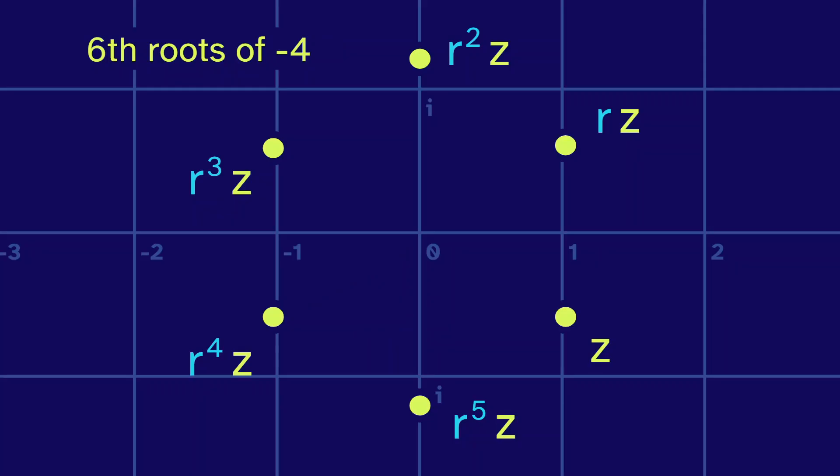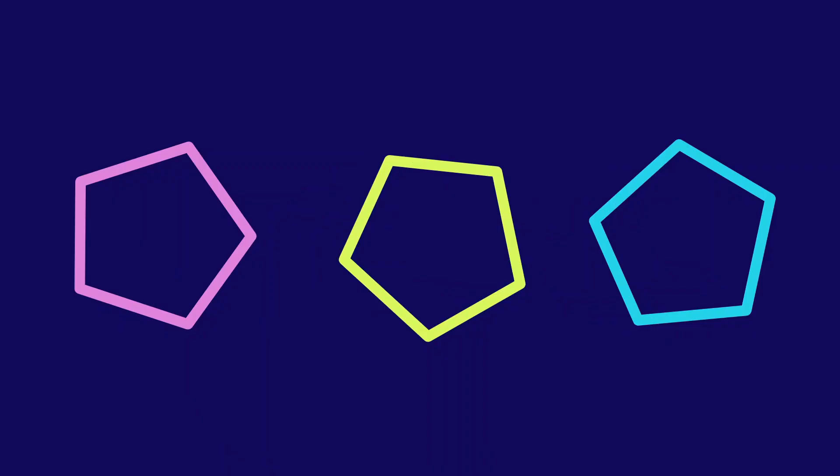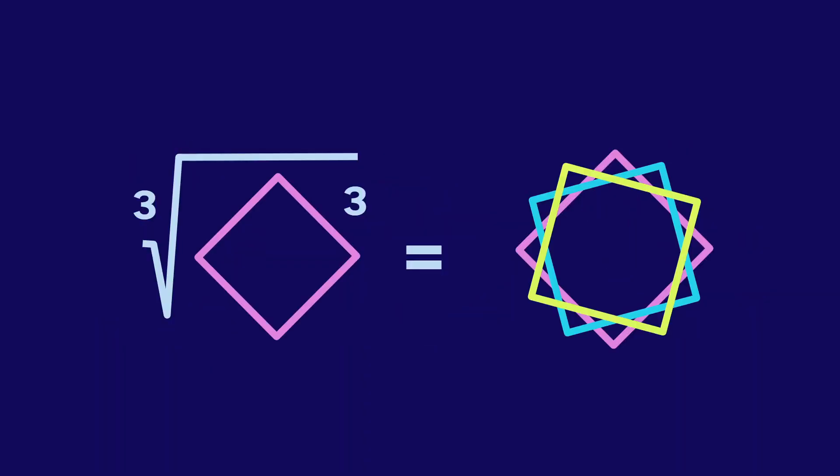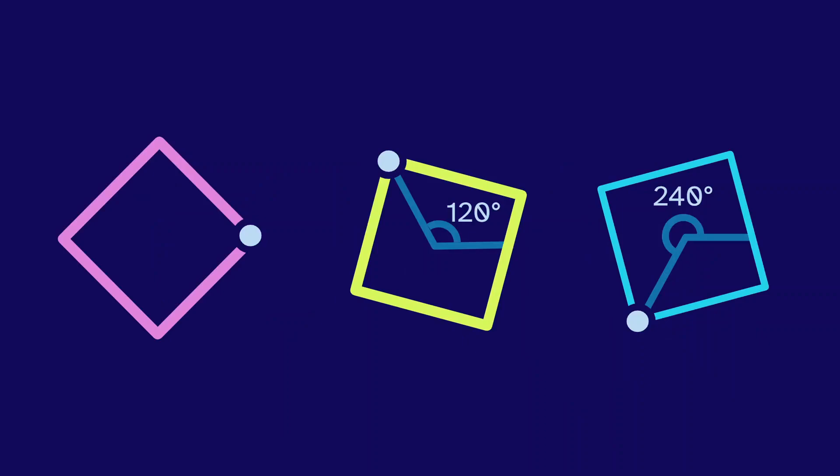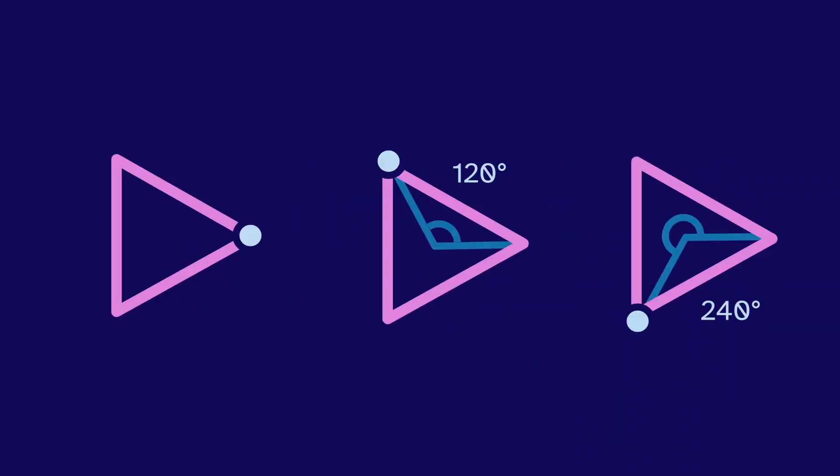And this explains what happened at the start of the video. The cube root of a pentagon cubed is three pentagons. These three pentagons are rotated versions of each other, one by 120 degrees and one by 240 degrees. When we cube, those rotations cancel out. The same thing happened with the square. The cube root results in rotated copies of the same square. And it didn't happen with the triangle, because if we rotate a triangle by 120 degrees, it just looks the exact same.